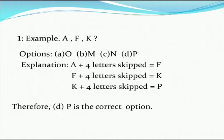Let's do it. Now, the first letter is A. If you add A plus 4 letters skipped, you get F. Again, F plus 4 letters skipped, you get K. And again, K plus 4 letters skipped, you get P. Therefore, the correct option is D and your answer is P.